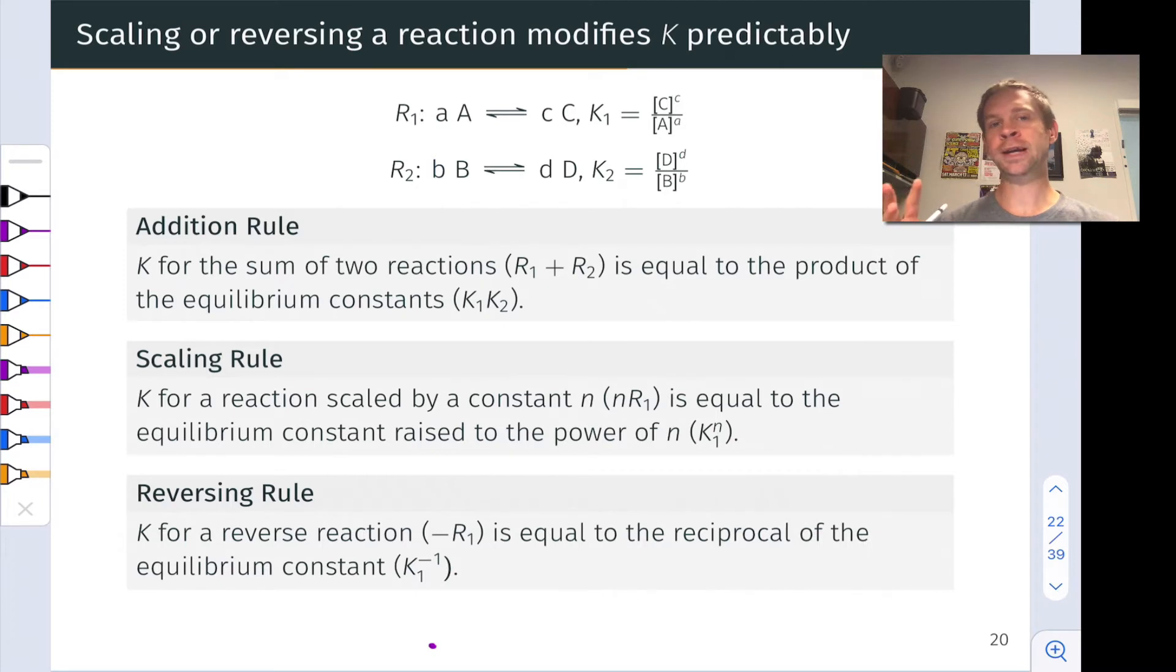So we're going to develop three sort of rules, I call them in this video. They really follow pretty straightforwardly from the math of reaction quotients. Three rules for how modifying a reaction changes the value of K. And this is going to be useful again for understanding equilibrium constants for reactions that are unknown or that we want to know about that we've never run from data about reactions that we do know the equilibrium constant for.